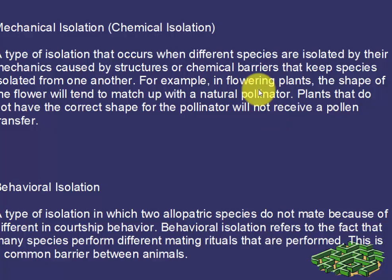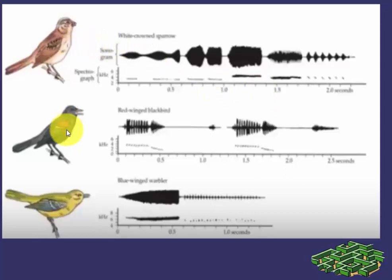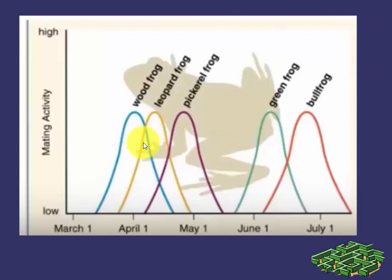The next is behavioral isolation. It is a type of isolation in which two species do not mate because of differences in courtship behavior. Courtship behavior includes signals, calls, songs, and pheromones that are released — if these are different between species, they will not mate with each other and they are isolated. As you can see in this picture, there are three types of birds whose calls and song patterns are totally different, so they will not mate with each other.